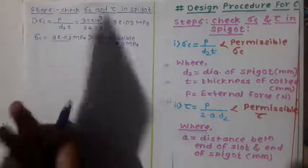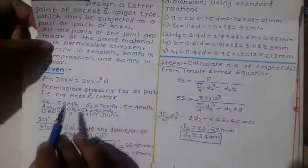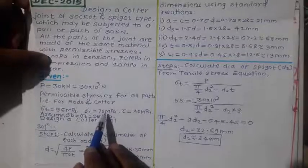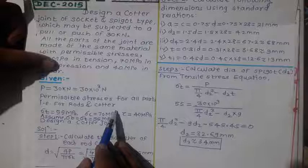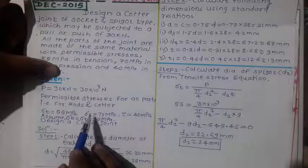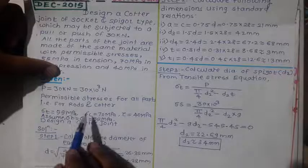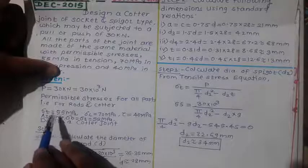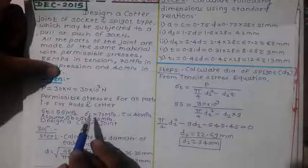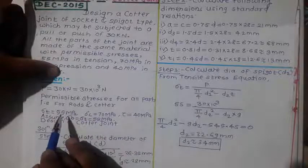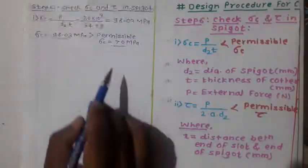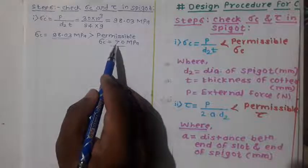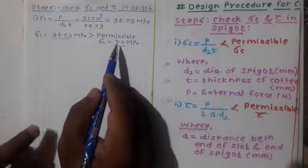This unsafe result arises because for a cotter joint, the permissible compressive stress should normally be double the permissible tensile stress — that is, 2 × 55 = 110 MPa. However, the problem gives σc = 70 MPa, which is not double σt, and that is why the unsafe condition has arisen.